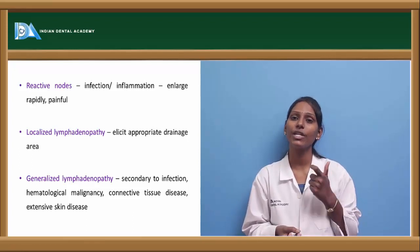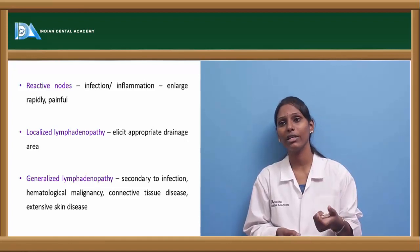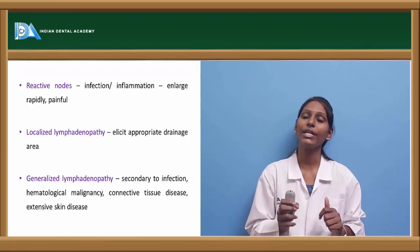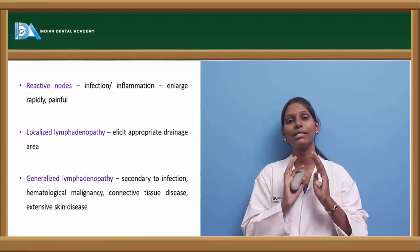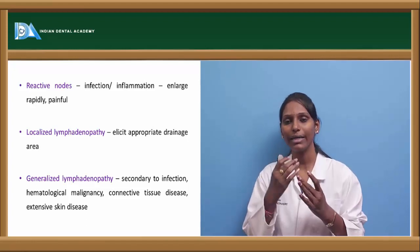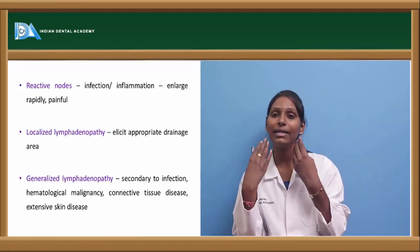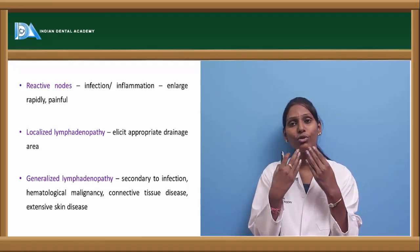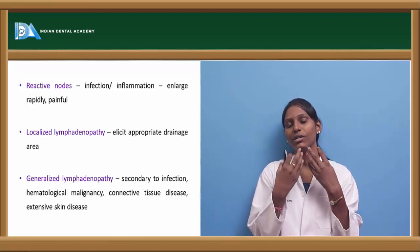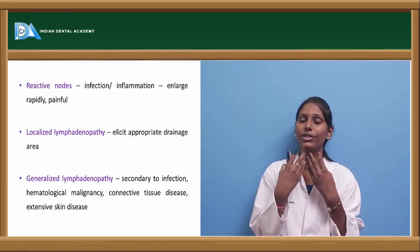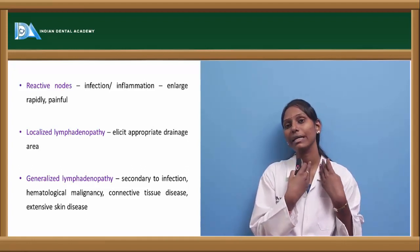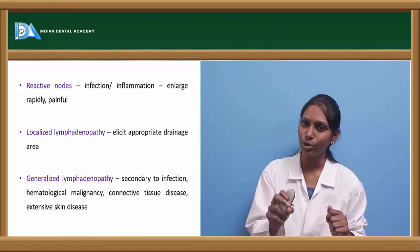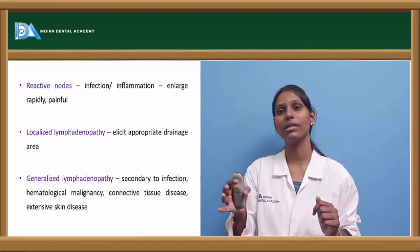Lymph nodes enlarged because of any underlying inflammation or infection enlarge rapidly and are painful — these are called reactive lymph nodes. In case of localized lymphadenopathy, always try to elicit the source of infection draining into that area. For example, if cervical lymph nodes are enlarged, the mandible or maxillary region — any source of infection such as dental caries or periodontal abscess — can drain into the cervical or submandibular lymph nodes. Submental and submandibular lymph nodes usually drain into cervical lymph nodes.